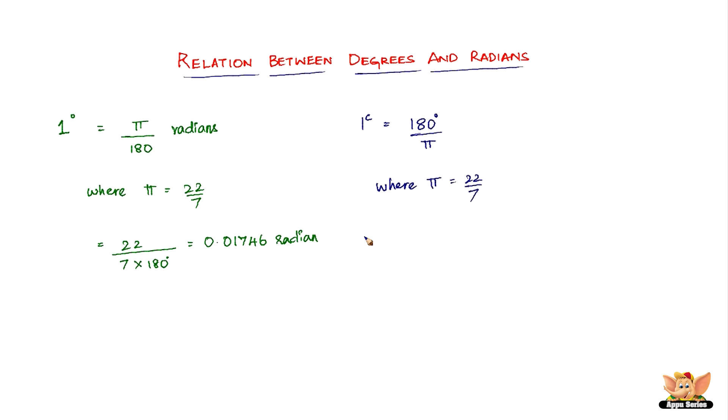To get a detailed answer for what 1 radian equals, work out 180 degrees times 22 divided by 7, which equals 57 degrees, 16 minutes, 22 seconds.